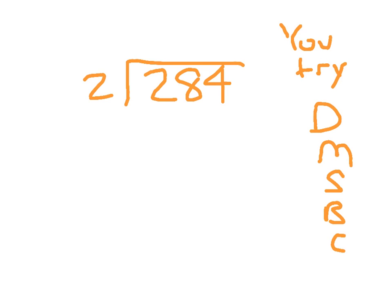Two goes into two one whole time. Because one times two is two, and two minus two is zero. We bring down the eight and divide by two, which is four. Four times two is eight, and eight minus eight is zero.